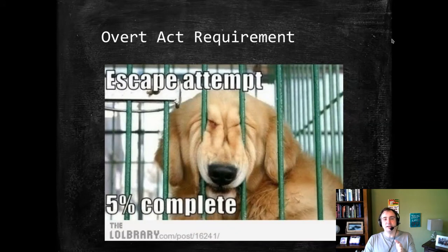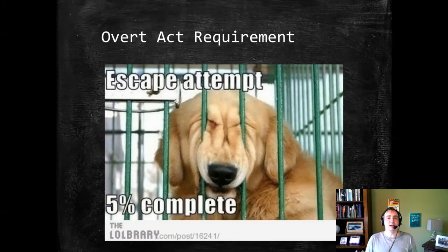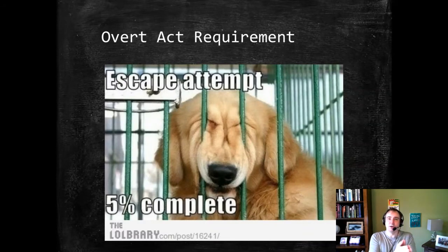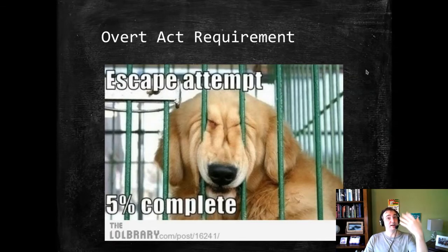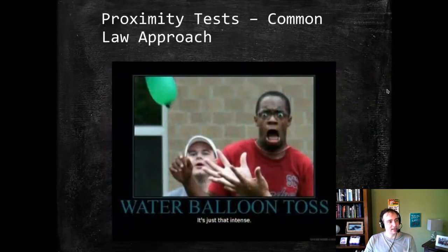The rule that both jurisdictions use — or the label for the rule — saying when preparation crosses into attempt is the overt act requirement. The overt act is what signals you're no longer preparing; you are now attempting the crime. In a backward-looking test, a dog has done 5% of what needs to be done; in a forward-looking test, he's still got 95% to go — if we could quantitatively nail it down from an escape from doggy prison.